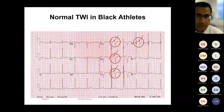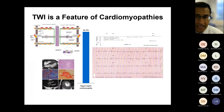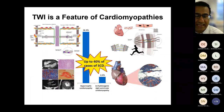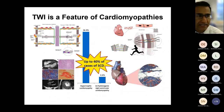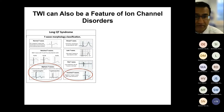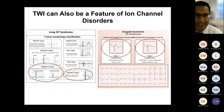However, we must also remember that T-wave inversion is a feature of cardiomyopathies including hypertrophic cardiomyopathy and arrhythmogenic cardiomyopathy, which together account for at least 40 percent of cases of sudden cardiac death. It therefore becomes apparent why differentiation between normal and abnormal T-wave inversion is so important in day-to-day clinical practice. T-wave inversion can also be a feature of ion channel disorders including long QT syndrome and Brugada syndrome. So those are the ECG changes — let's move on to look at the structural changes that may overlap between physiology and pathology.